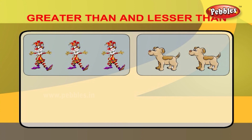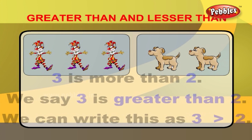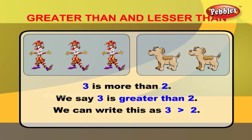The number of jokers are 1, 2, 3. And the number of dogs are 1, 2. 3 is more than 2. In other words, we say 3 is greater than 2. We can write this as 3 greater than 2.